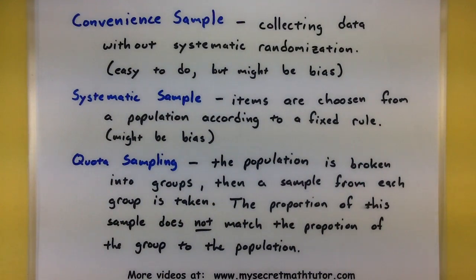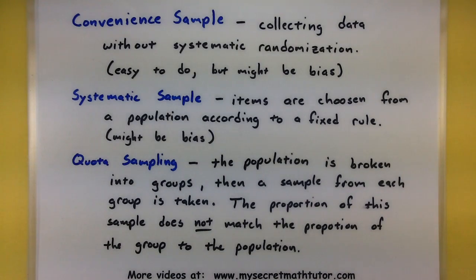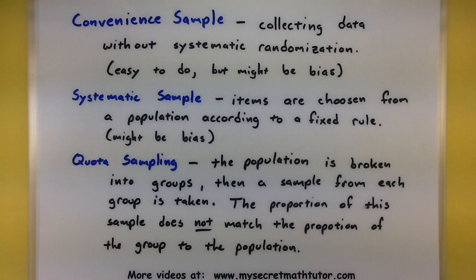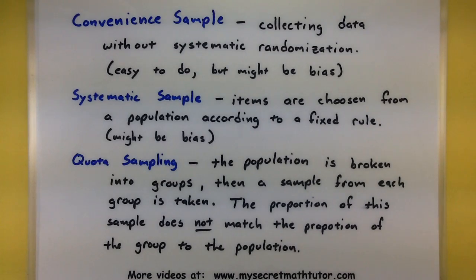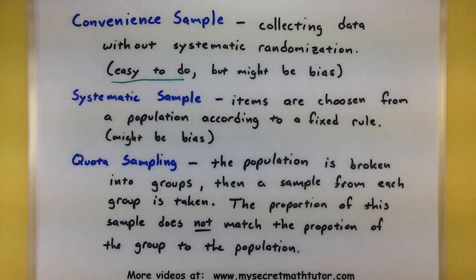Another big type of sampling that you'll often hear is convenience sampling. This is collecting data without any systematic randomization. At first glance, this type of sampling may seem like a really bad idea. After all, if you don't have some sort of system and you're not randomizing things, do you really want to do this type of sampling? Well, the reason why convenience sampling is sometimes nice is that it's often the easiest to do. Unfortunately, this one might be biased as well.